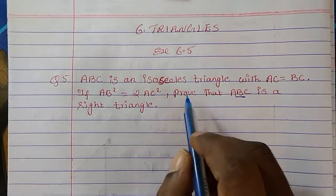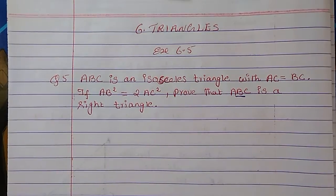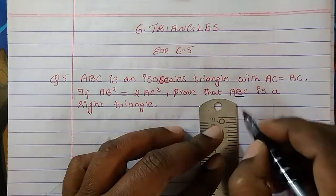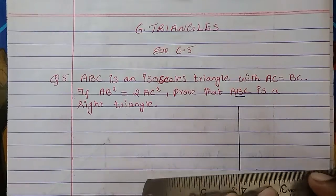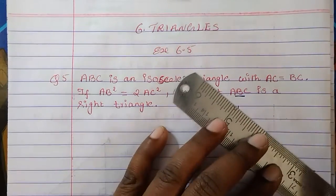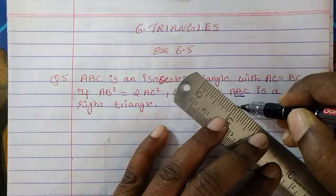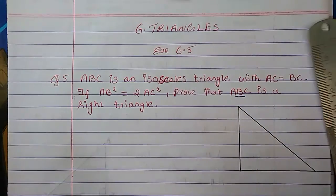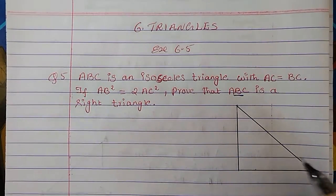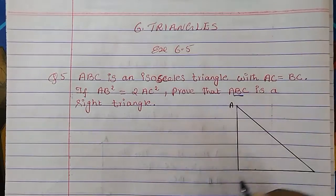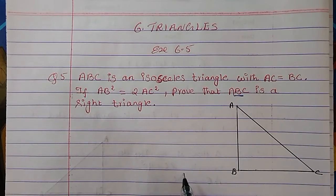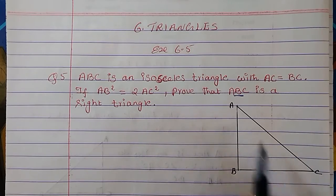First of all, let us draw triangle ABC. We have to prove this is a right angle triangle, so I am drawing it this way. What is given here? AC is equal to BC.